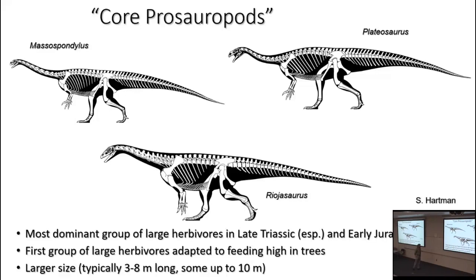The core prosauropods were the most dominant group of large-bodied herbivores in the late Triassic and early Jurassic. This was still the late Triassic world dominated by pseudosuchians, but none of the herbivorous pseudosuchians came anywhere near as large as these guys. This is also, probably not coincidentally, the first group of large herbivores adapted to feeding higher in trees. Prior to that you could be a small-bodied herbivore and climb into trees, or a big herbivore feeding close to the ground — but not simultaneously a big animal feeding high in trees. These guys were the first.